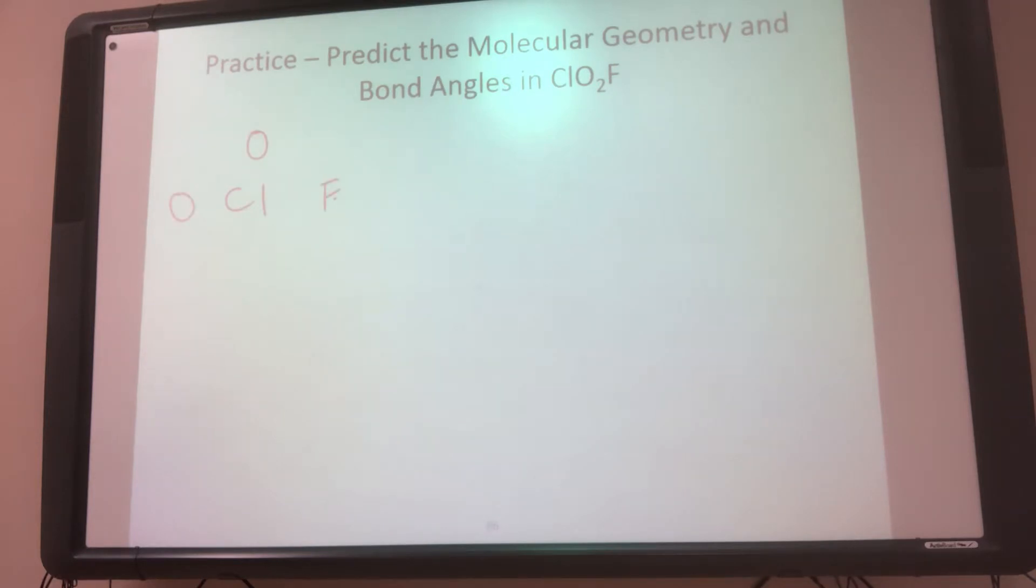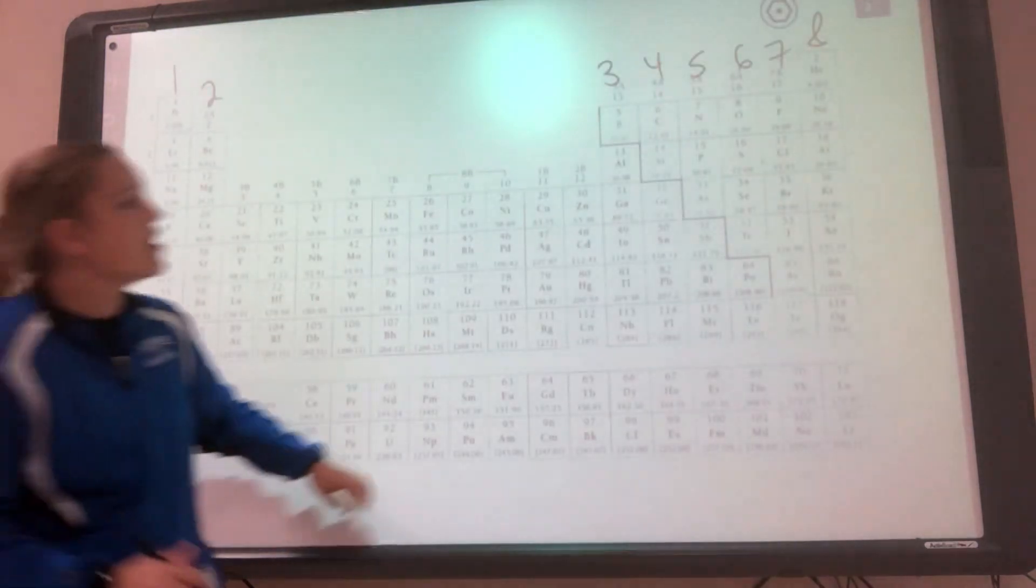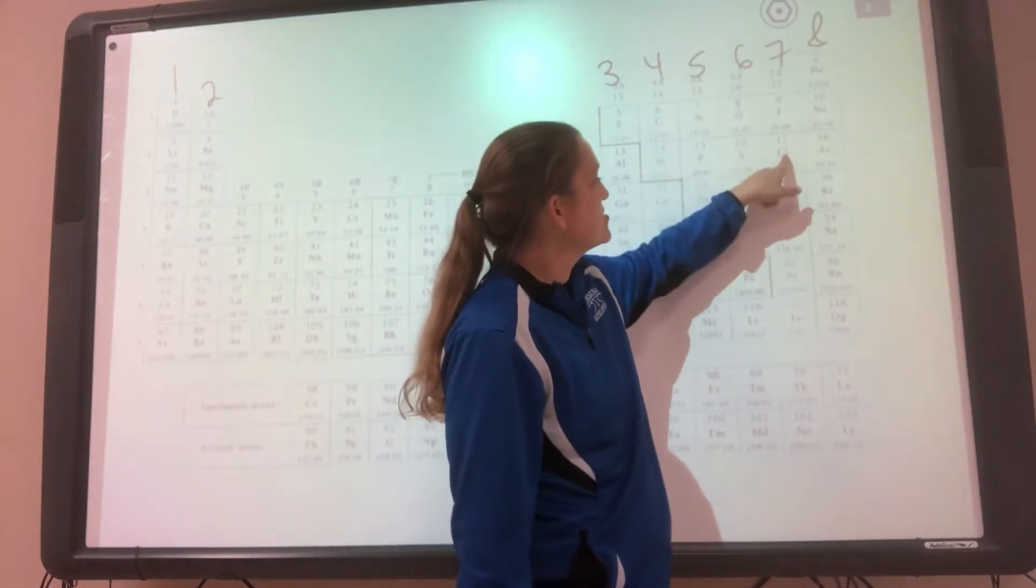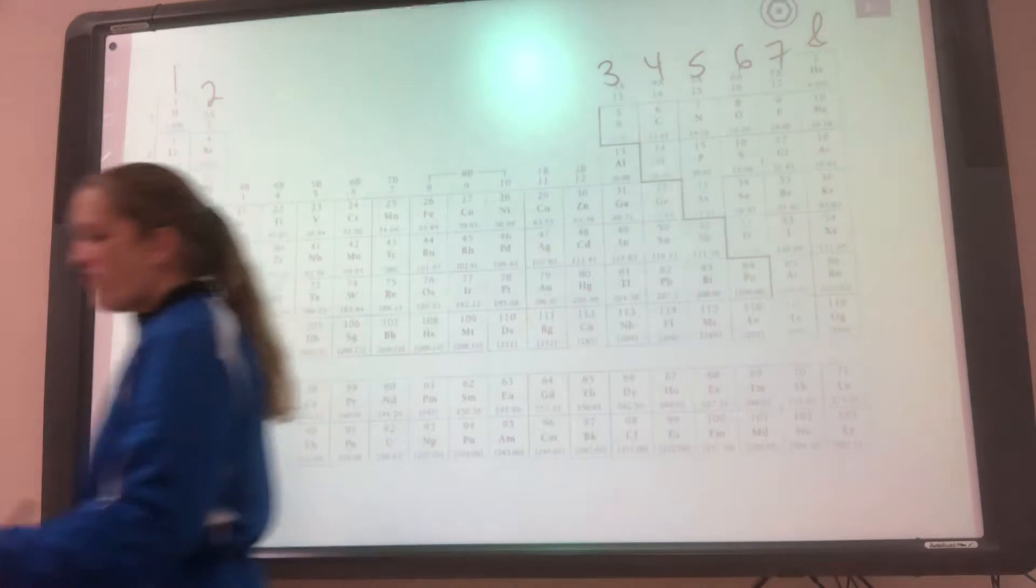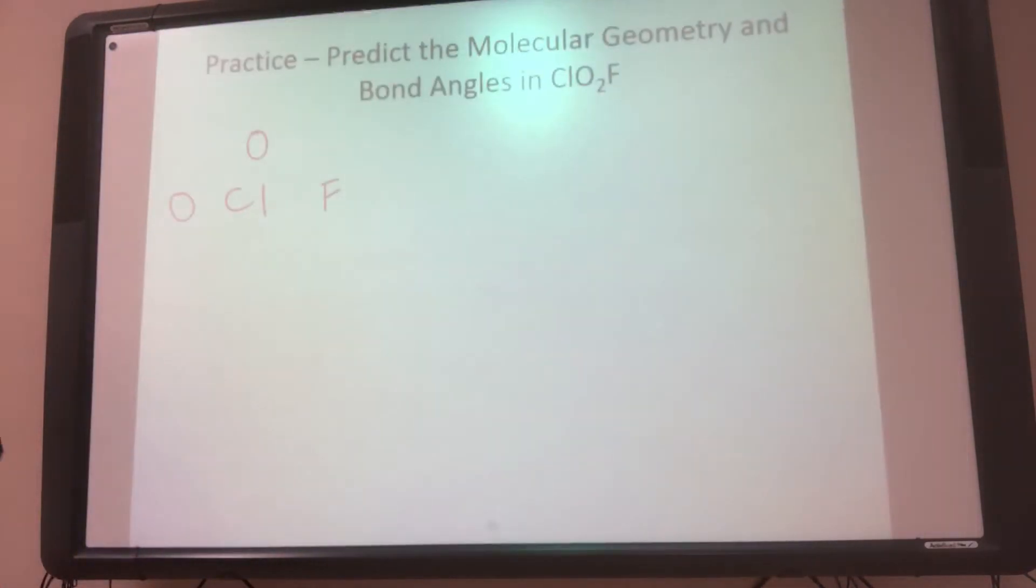We want to count our electrons. So O has 6, Cl and F have 7 valence electrons. So 1 Cl at 7, 2 O's at 6, and 1 fluorine at 7 gives me 26 electrons.